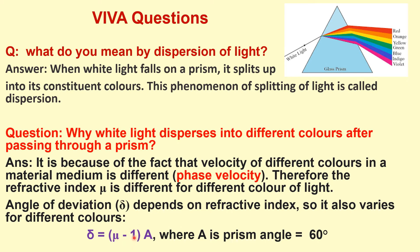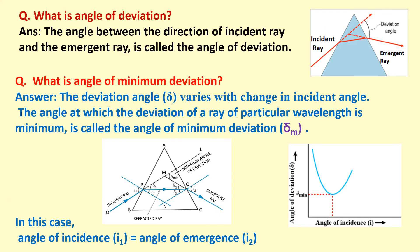Delta equals (mu minus 1) times A, where A is the prism angle and it is 60 degrees. What is the angle of deviation? It is the angle between the direction of the incident ray and the emergent ray. This angle is known as the angle of deviation.